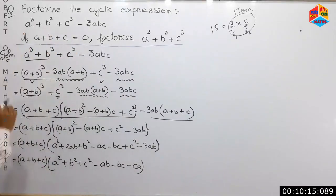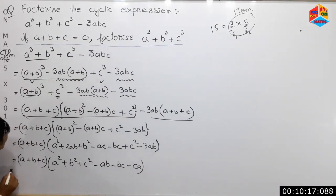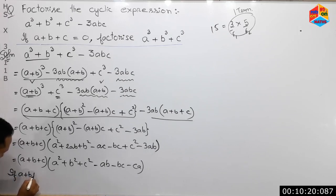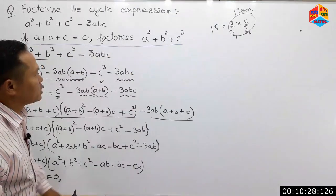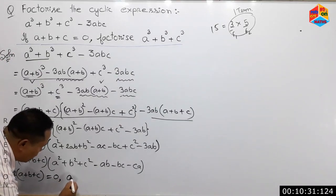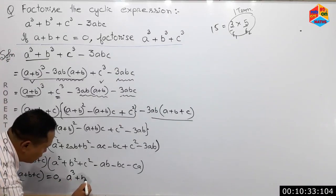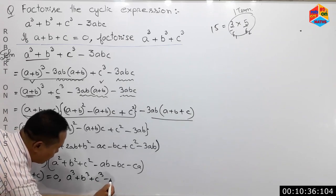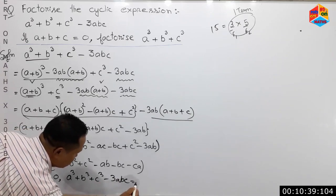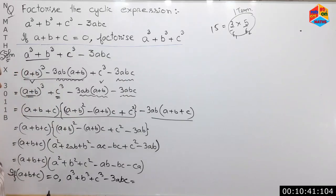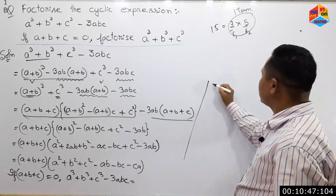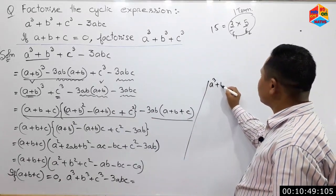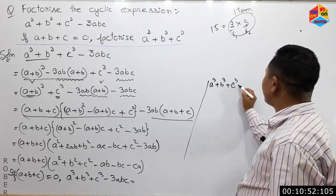If a plus b plus c is 0, then you will see a plus b plus c is 0. If you see that, there will be a plus c plus a plus c. This is the same thing — a cube plus b cube plus c cube minus 3abc.